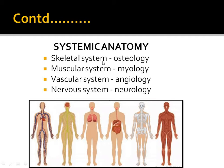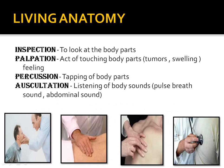Systemic anatomy means we study anatomy system-wise. For example, the study of the skeletal system is called osteology, study of muscles is myology, study of blood vessels is angiology, study of the nervous system is neurology, and study of the digestive system from mouth to anal canal is gastroenterology — that is systemic anatomy.